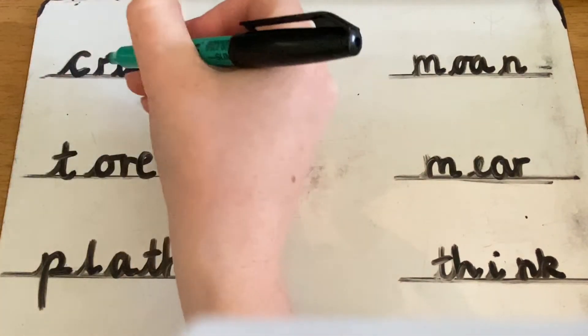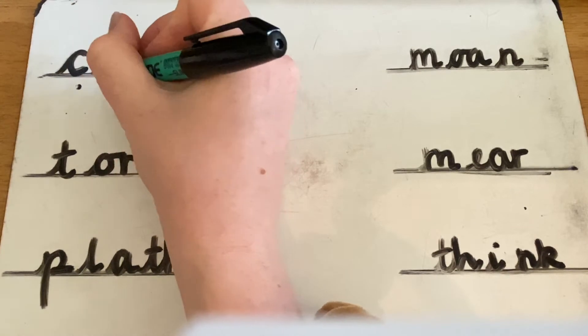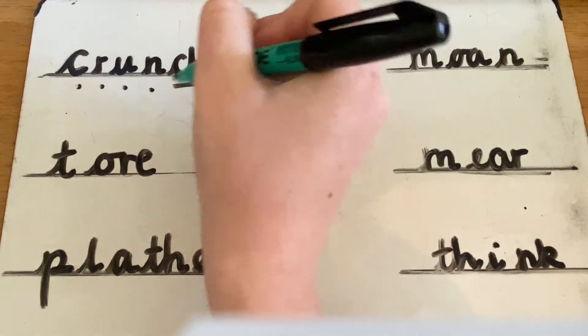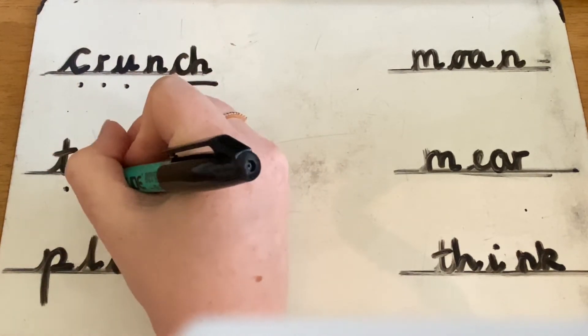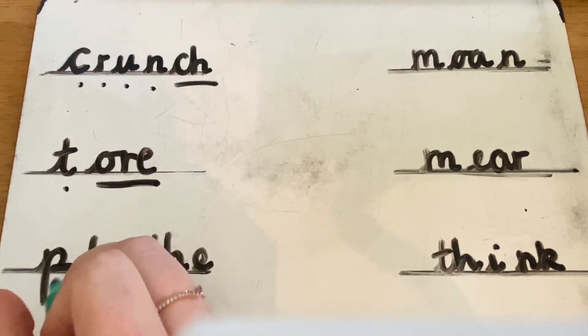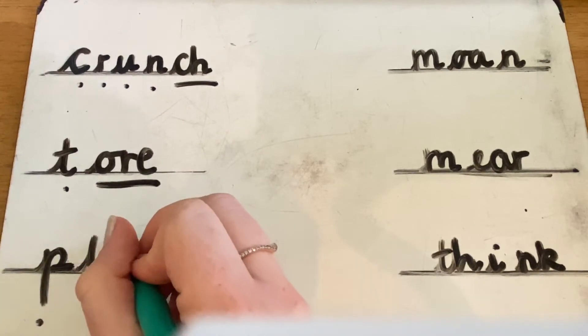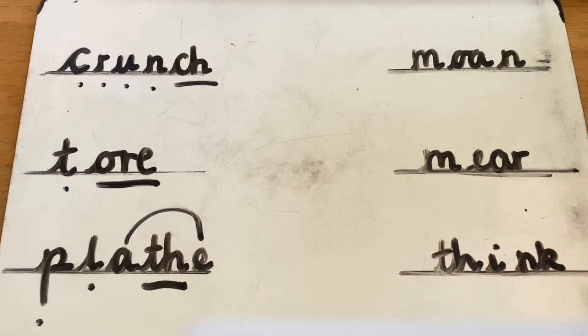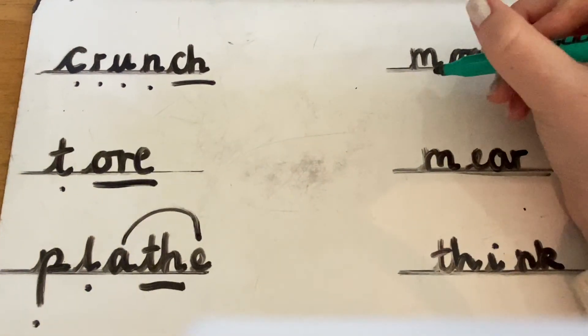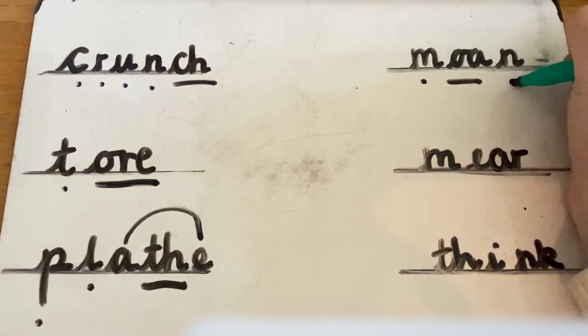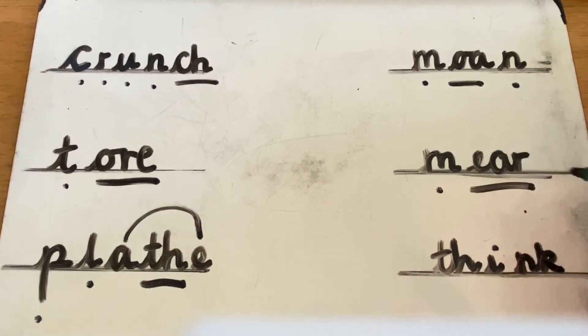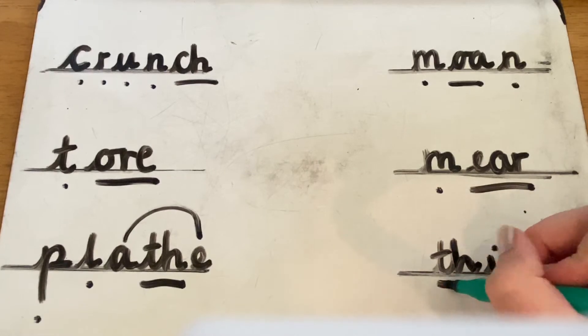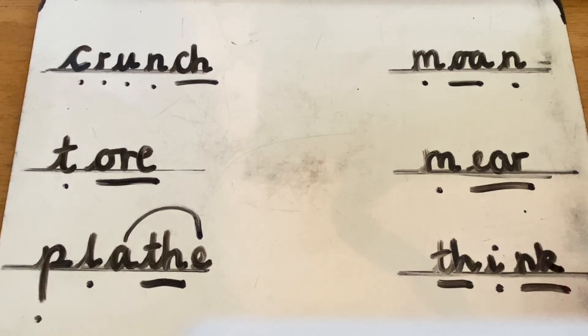Let's go and read some words. Okay, let's have a go at reading these words then. Start over here. C. R. R. A. Ch. Crunch. T. Or. Tor. P. O. A. Th. Playth. M. O. N. Moan. M. Air. Mare. Th. I. N. K. Think.